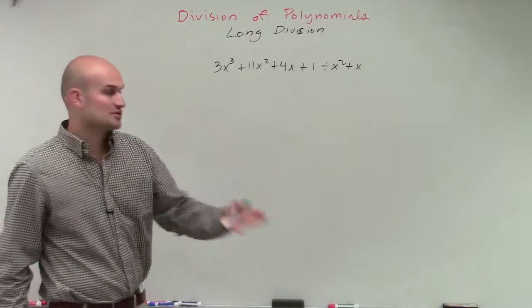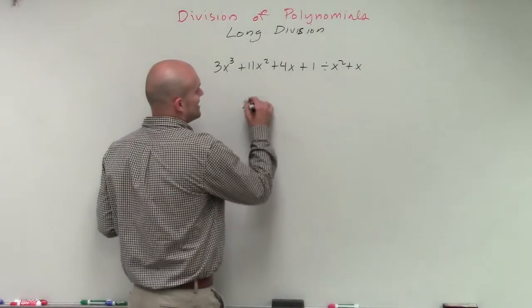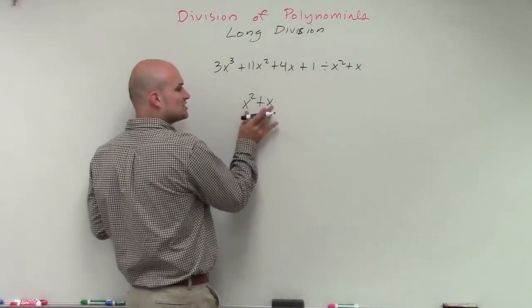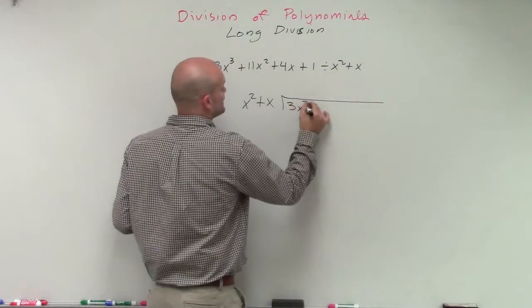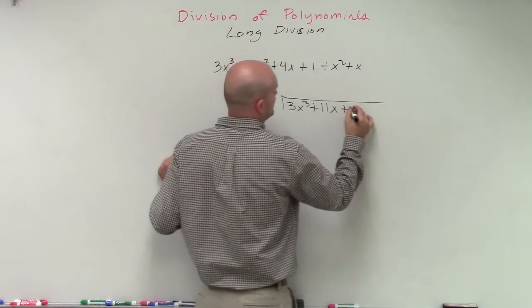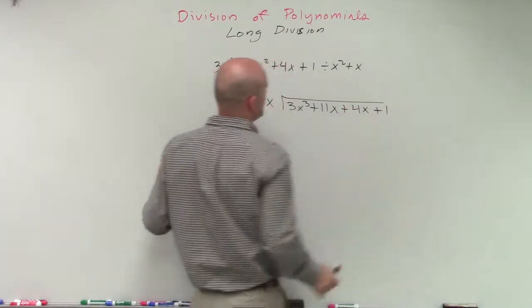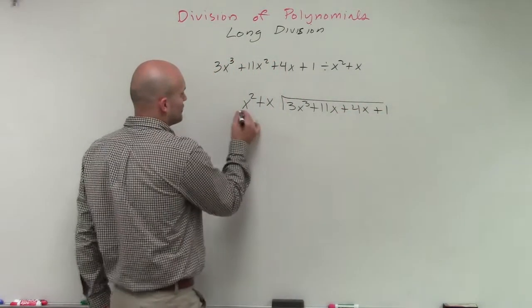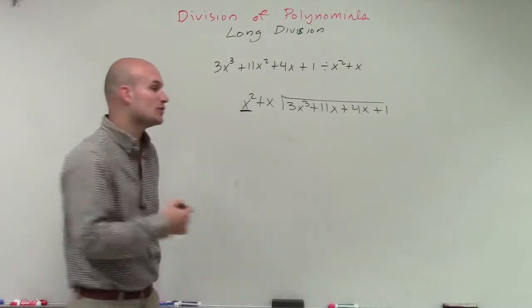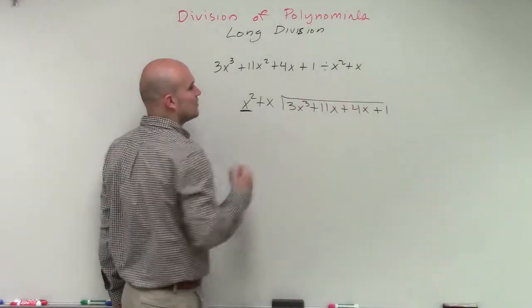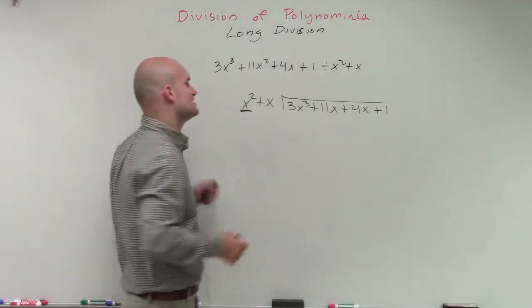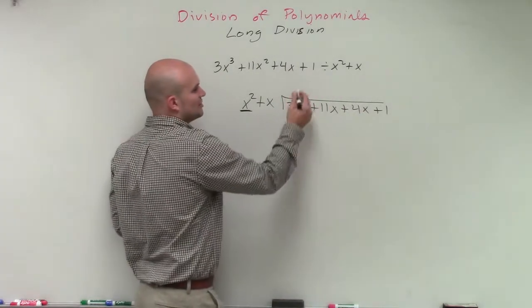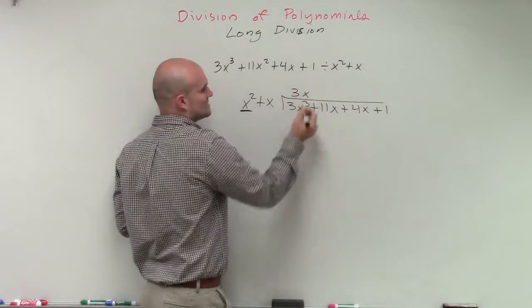So we're still going to apply the division algorithm. So I'm just going to rewrite this as x squared plus x, make sure this is in descending order, divided by 3x cubed plus 11x squared plus 4x plus 1. So again, all we're going to do is take our first term under the divisor when it's in descending order and divide into each one of our terms of our dividend. So x squared divides into 3x cubed. That's going to be a positive 3x times.